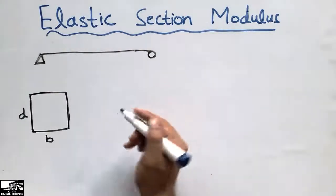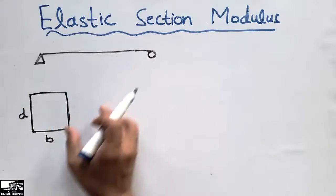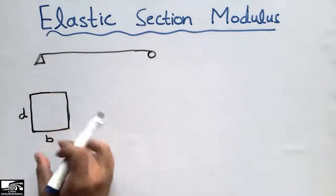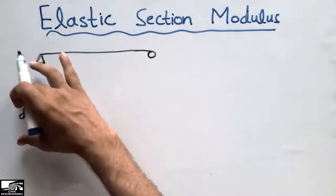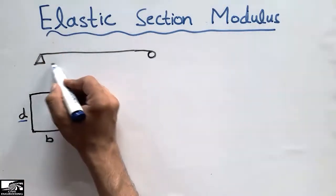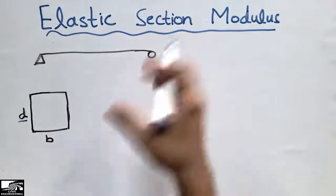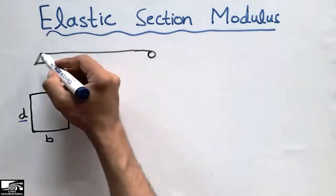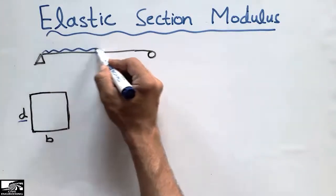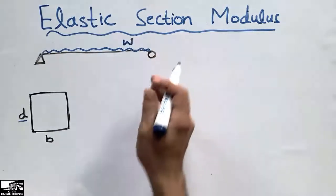Consider this is a simply supported beam with a rectangular cross-section. You can see the width is represented by B, the depth is represented by D, and it may be of any length. To start finding the elastic section modulus, consider a load W acting on this beam.